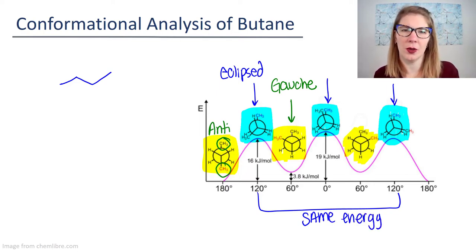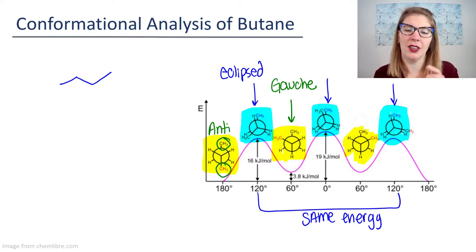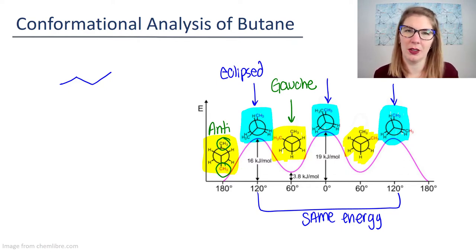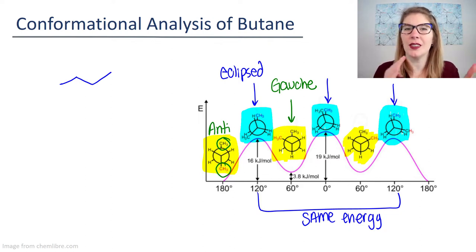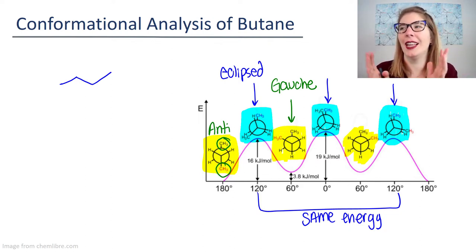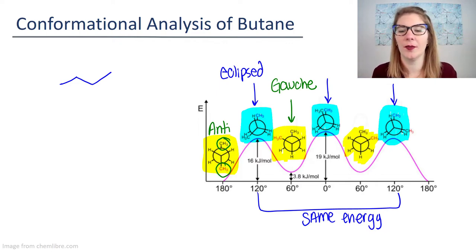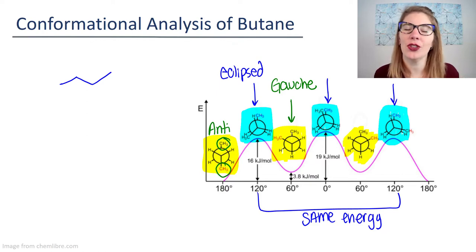Because in each instance, you have a CH3 eclipsing with a hydrogen and another CH3 eclipsing with a hydrogen—where eclipsing just means they're lined up with each other. That middle eclipsed conformation is still just called eclipsed, even though it's different from the other two.